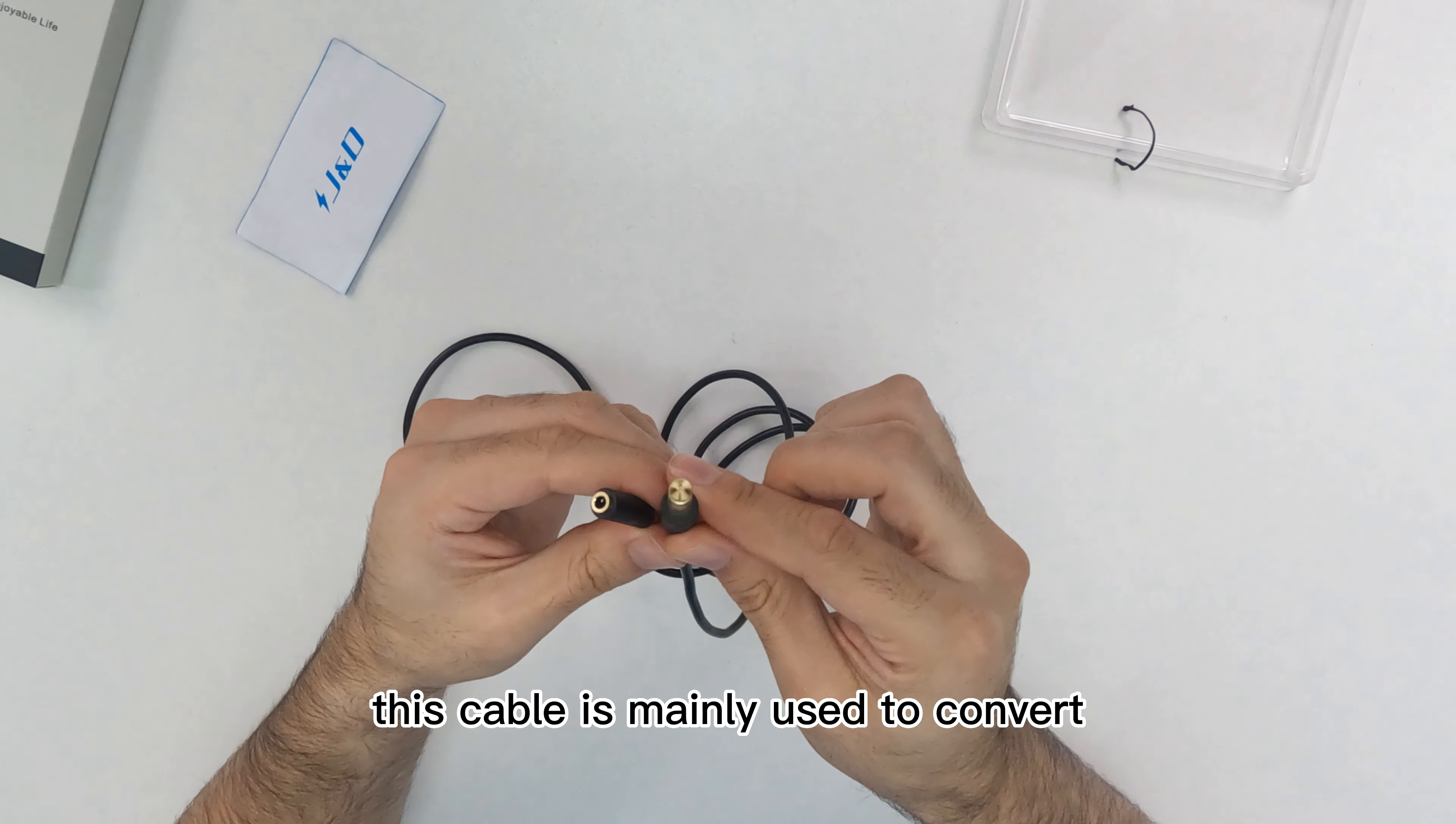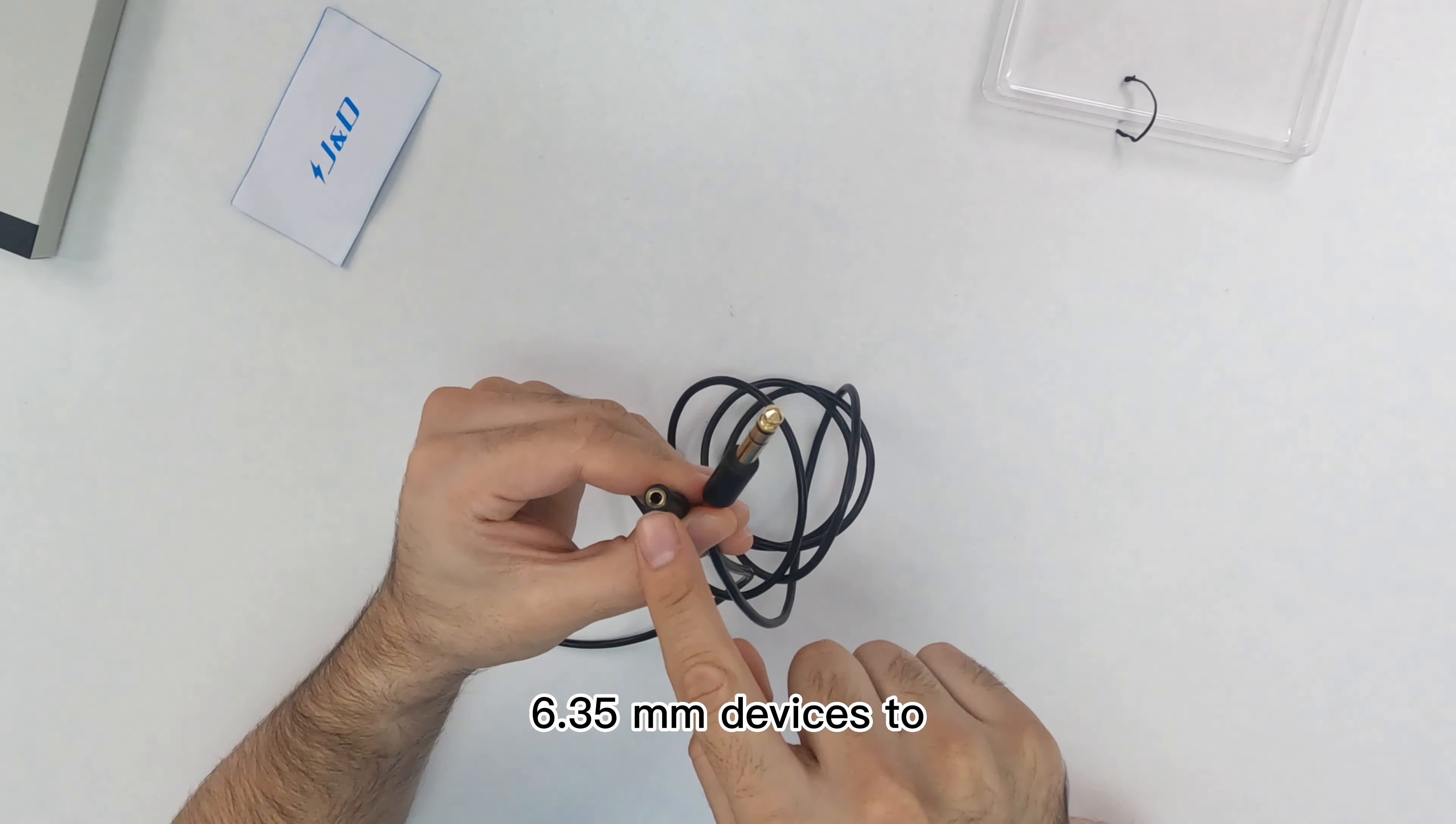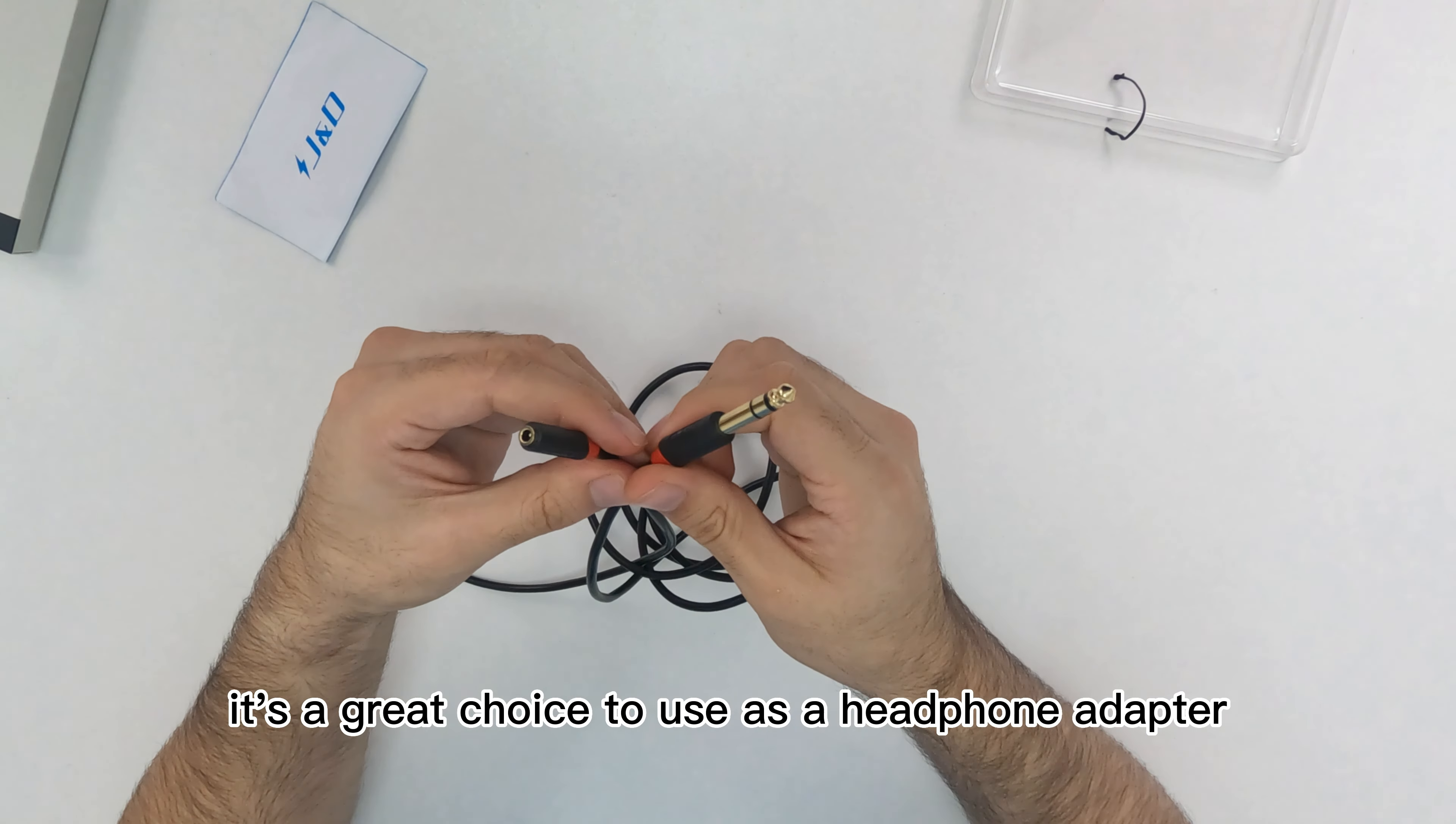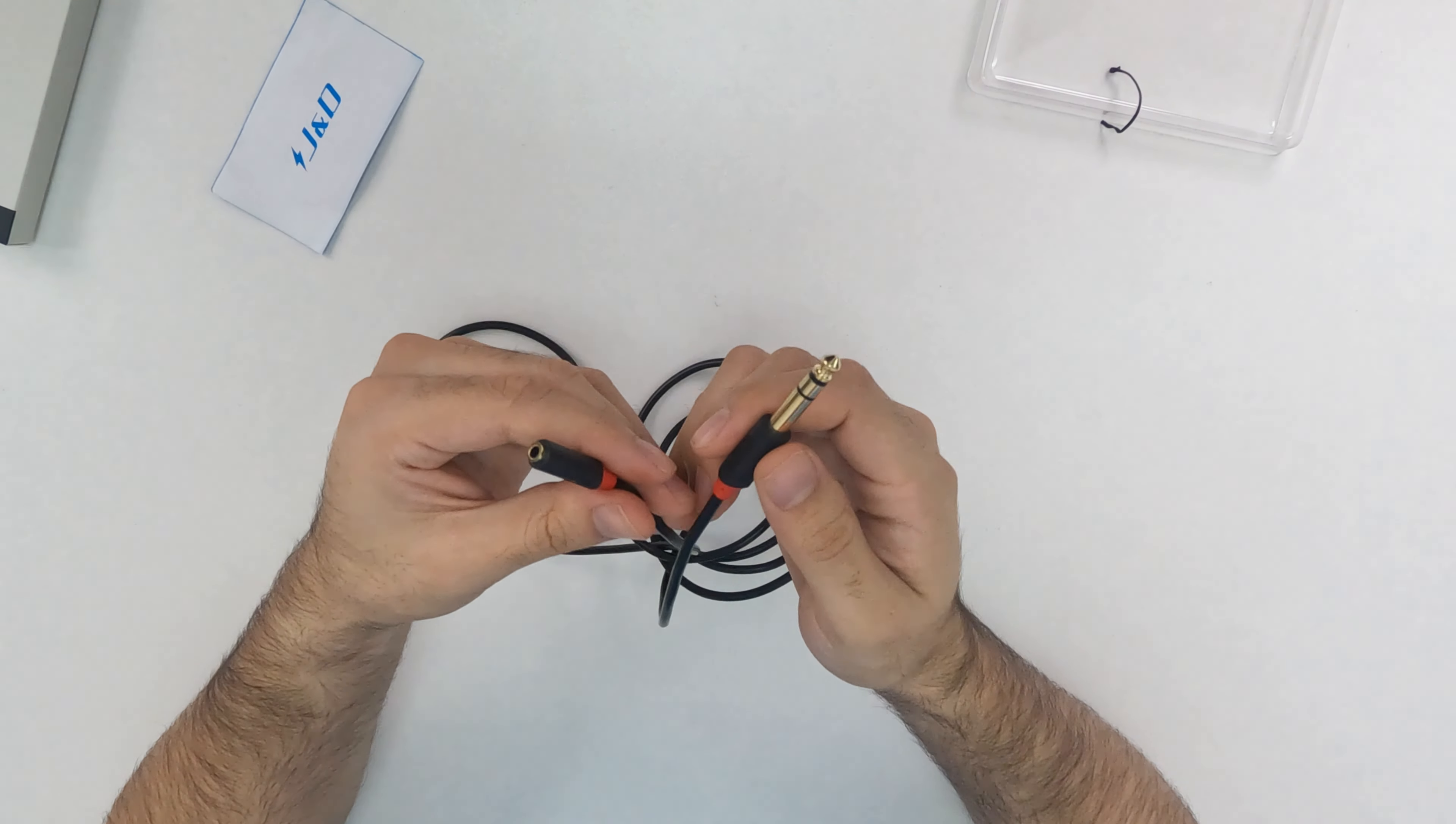This cable is mainly used to convert 6.35mm devices to 3.5mm devices with minimum sound signal loss and can work bi-directional. It's a great choice to use as a headphone adapter. Plug and play and good to go. Very convenient.